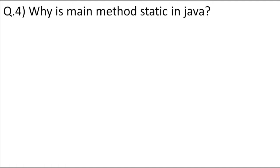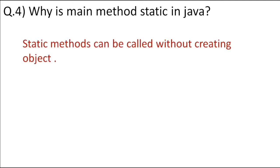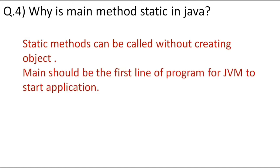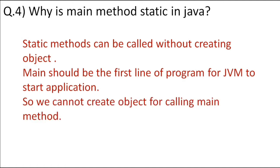A very commonly asked question is: why is the main method static in Java? Static methods can be called without creating an object. The main method should be the first line of execution, so JVM calls it first. We cannot have any code before the main method, meaning we cannot create an object before it. That is why the main method is static in Java.